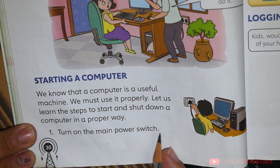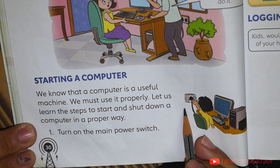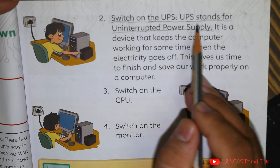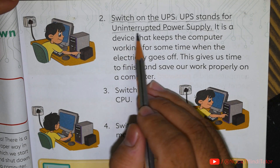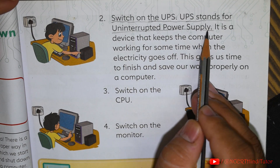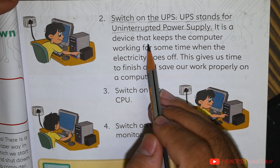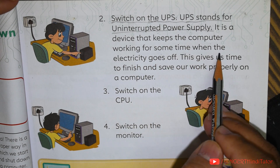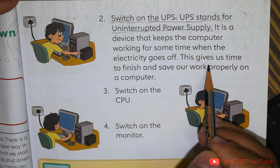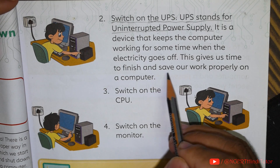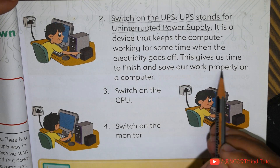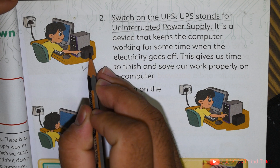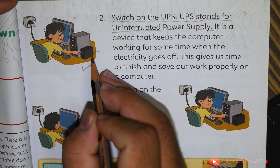turn on the main power switch, as you can see in the photo. Second, switch on the UPS. UPS stands for Uninterrupted Power Supply. It is a device that keeps the computer working for some time when the electricity goes off. This gives us time to finish and save our work properly. As you can see in the photo, this is the photo of a UPS.